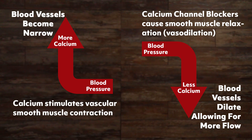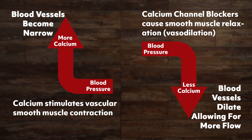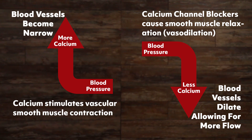Because calcium stimulates vascular smooth muscle contraction, when there is more calcium in the cells, the vessels become narrower and blood pressure increases. When there is less calcium in the cells, the blood vessels are more relaxed and wider, so blood pressure decreases.